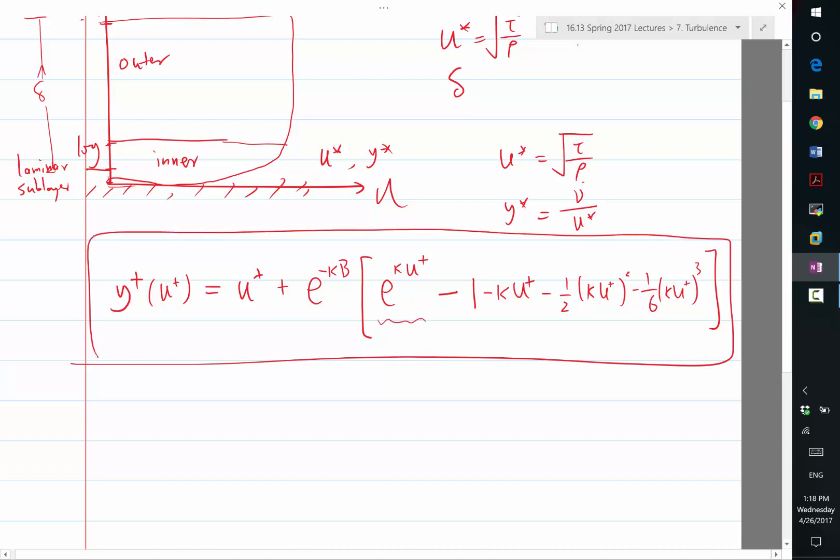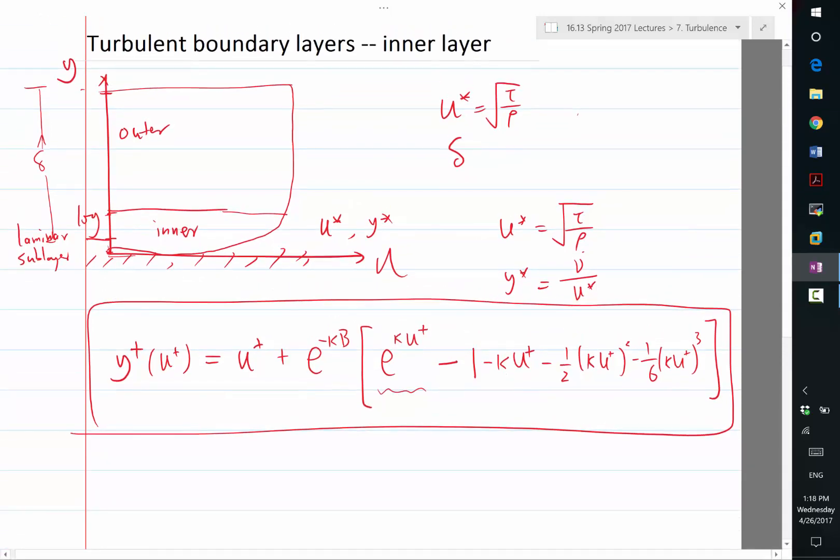No matter what the boundary layer is, the inner layer has a fixed universal form. This is important when considering the outer layer, because as the outer layer approaches the wall, we know it has to conform to this profile, or at least the portion that dominates as u plus becomes much greater than 1. When u plus is much greater than 1, the exponential term is much larger than anything else.